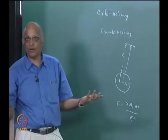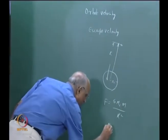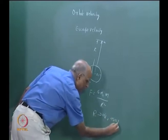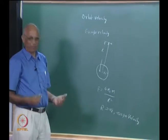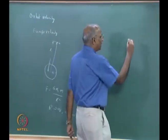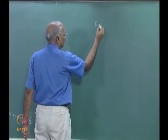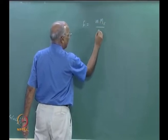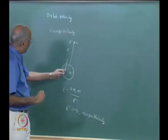What must be the value of r to escape? I want the force to be zero - I want to escape from the attraction. Therefore it becomes infinity. I am looking at r must be infinity in order to have the escape velocity. Now, how do I do this problem? It is the same as what we are doing. The force is equal to m times mass of the earth divided by r squared times G, and what is the work I must do to take it from here to infinity?